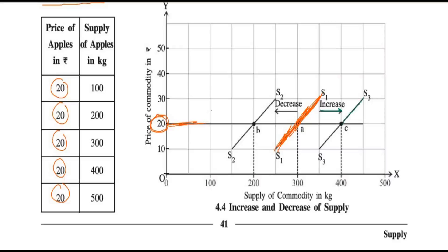S1 is the original supply curve. At price 20 rupees, if other factors are favorable, supply increases and we get the new curve S3 — supply becomes 400 units. If other factors are unfavorable, supply decreases and we get S2 — supply comes down to 200 kg. So at original 300 units: favorable factors increase supply; unfavorable factors decrease supply; price remains the same.